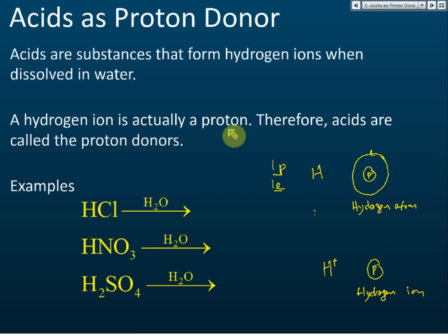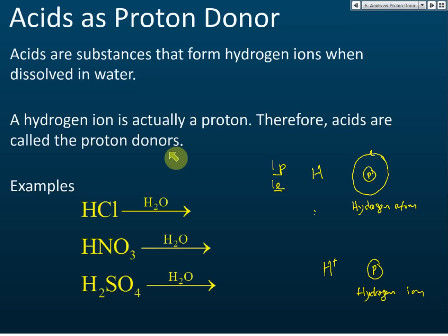Acids are substances or chemicals that give protons to other substances in chemical reactions. They give hydrogen ions — which are protons — to others. Therefore, acids are called proton donors: they are the chemicals that donate protons.